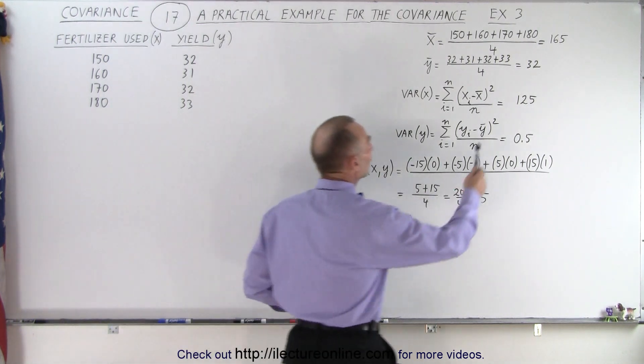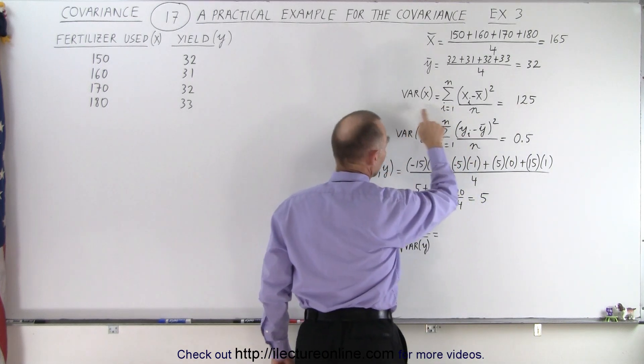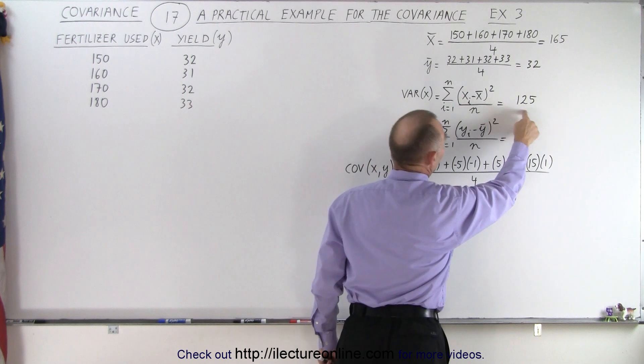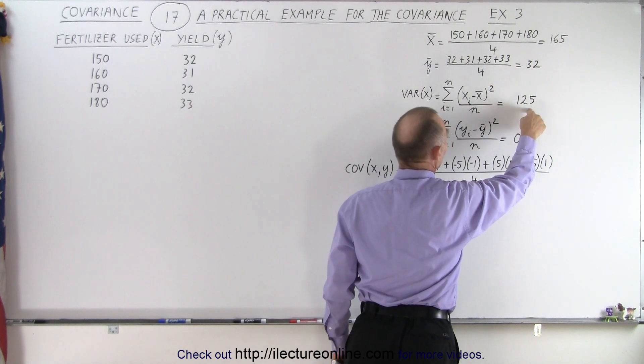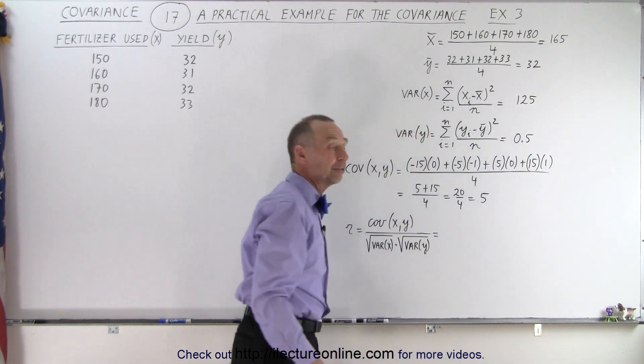So again, we worked ahead a little bit. We found the average in X and the average in Y. We calculated the variance in X and the variance in Y. Notice when we have a very large variance in the fertilizer used, we have a very tiny variance in the amount of yield.